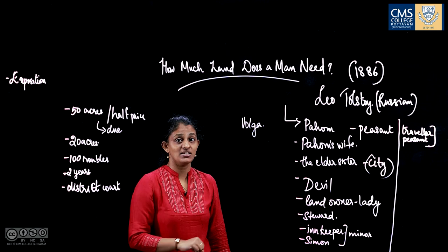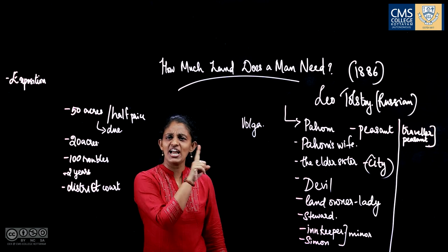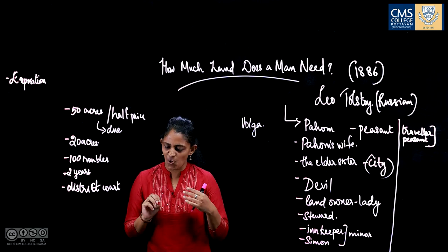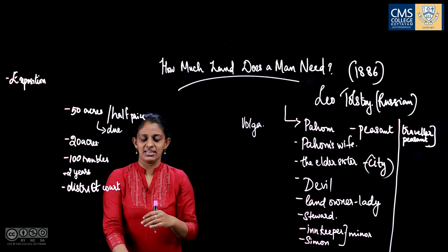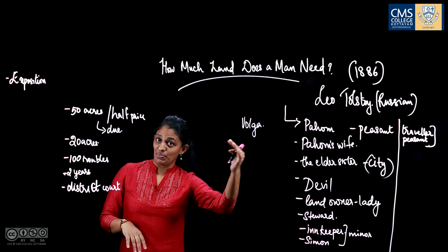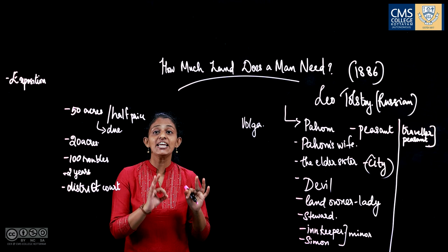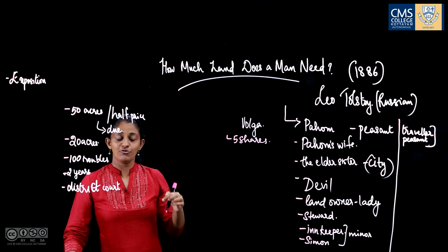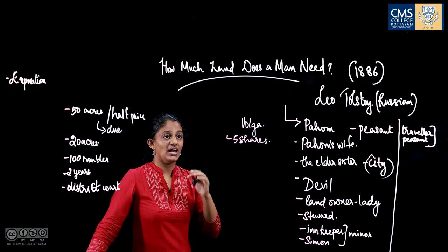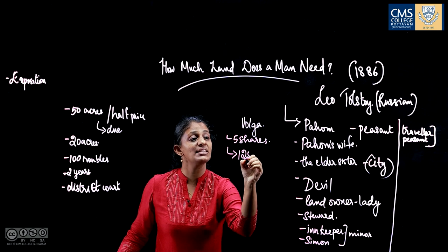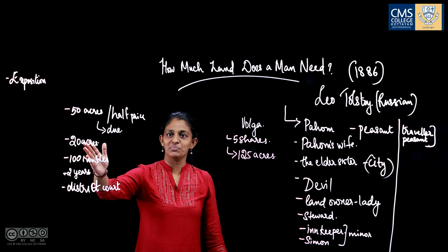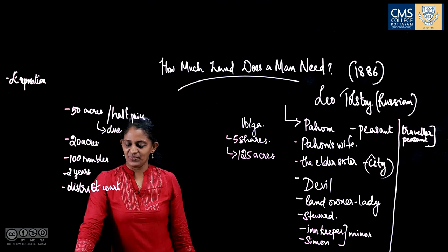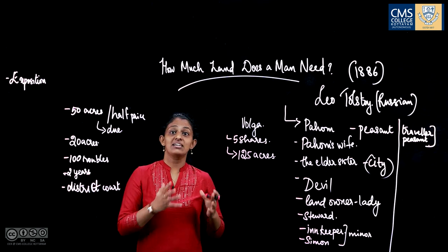So Pahom sold off everything — his belongings, his land, his home — and withdrew from membership in his community. He went to Volga, applied for membership there, and bought five shares of communal land for himself and his sons. In total he now had 125 acres of land — what a jump from 20 acres! He bought all that he needed and had plenty of fertile, cultivable land. He was extremely happy.